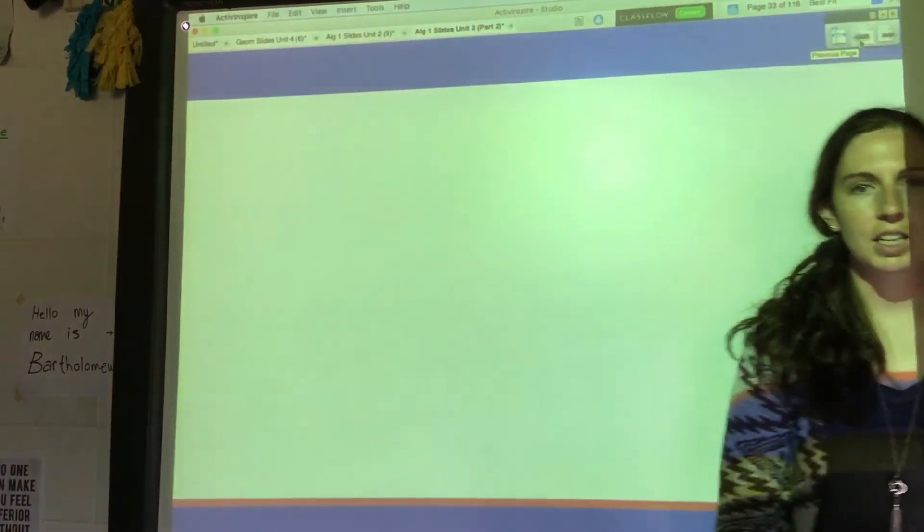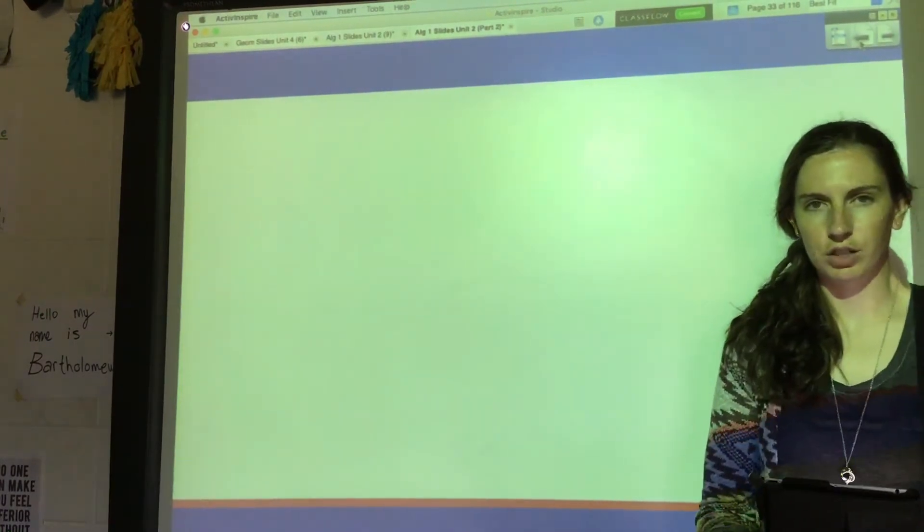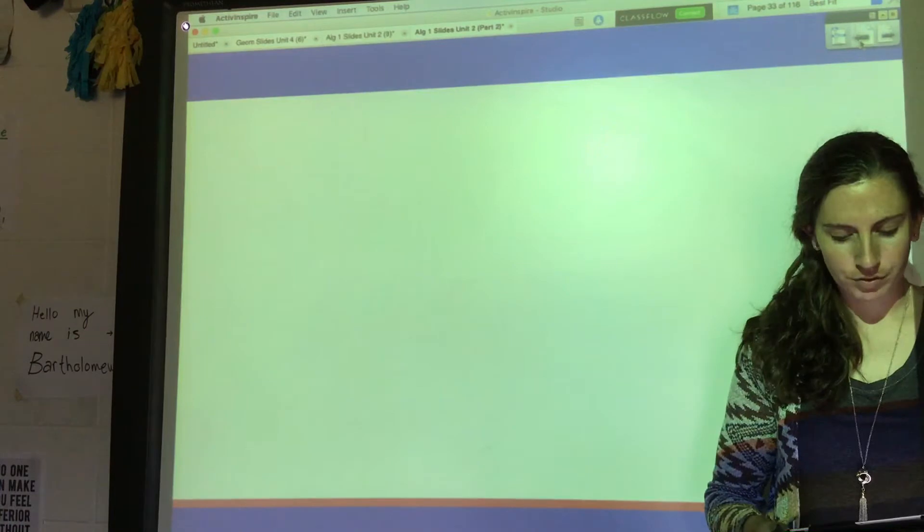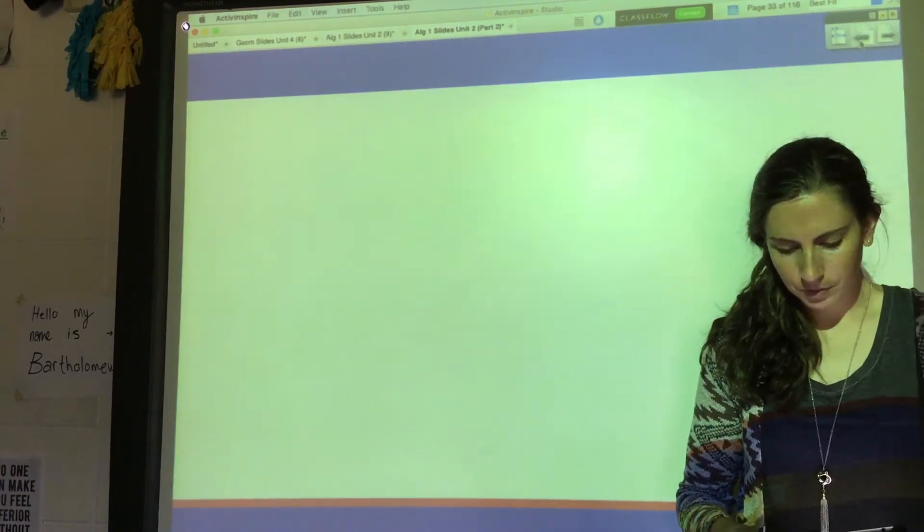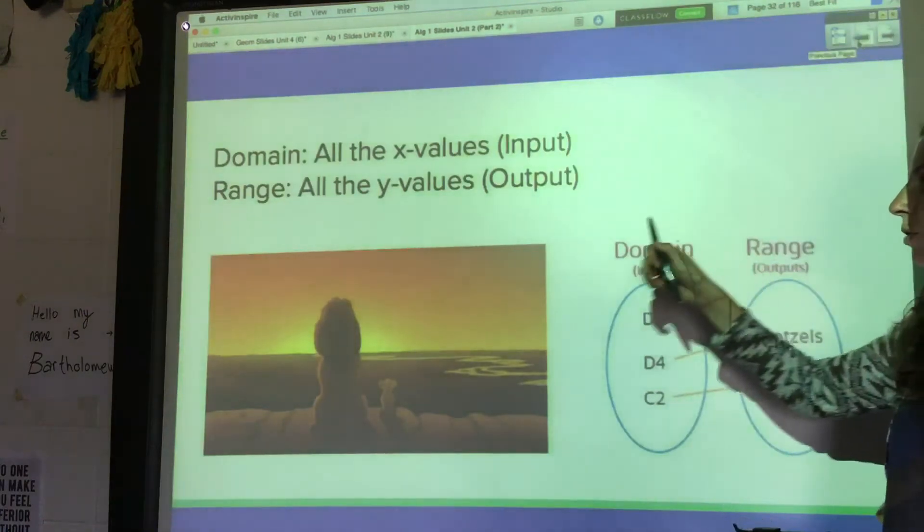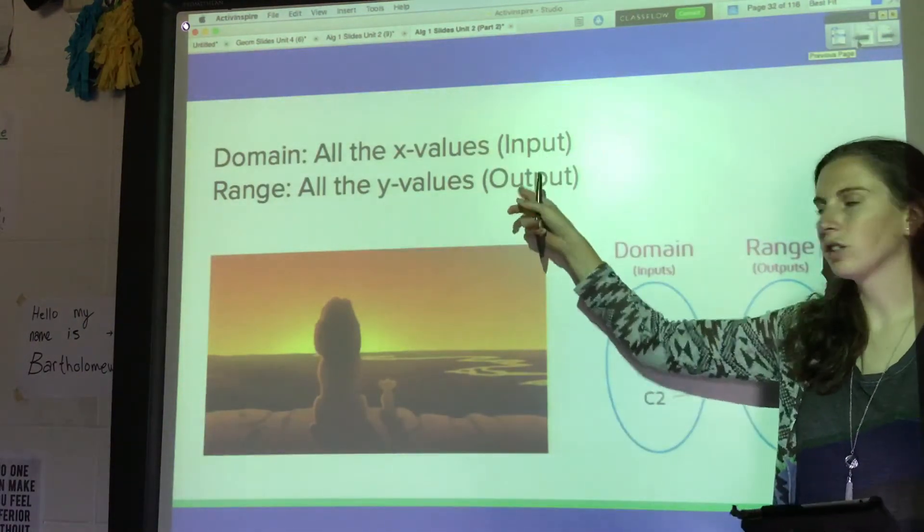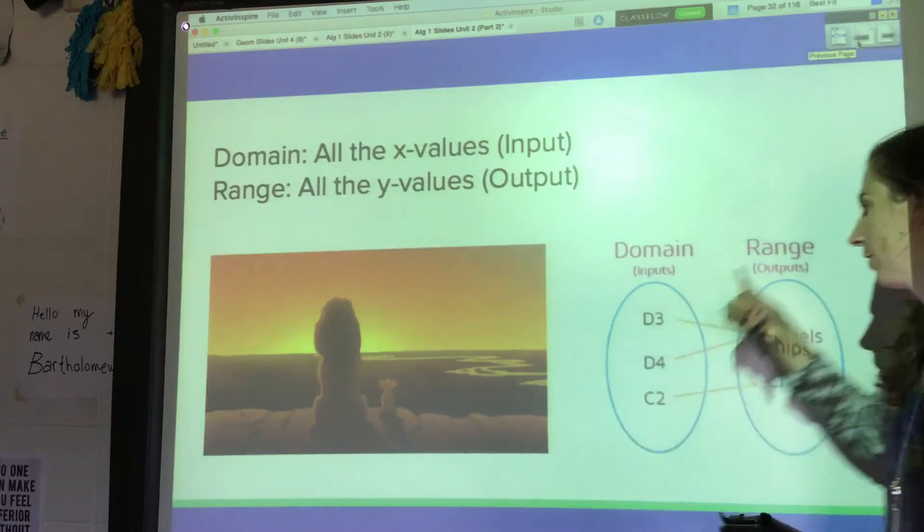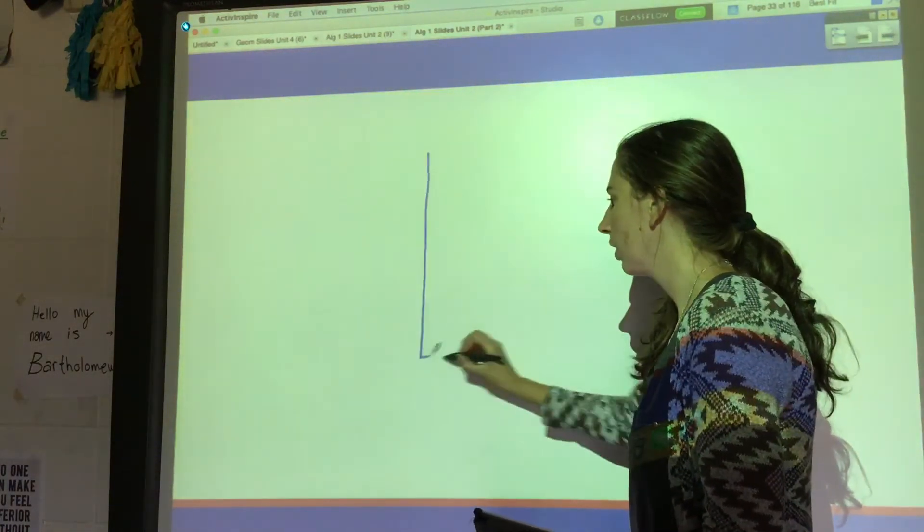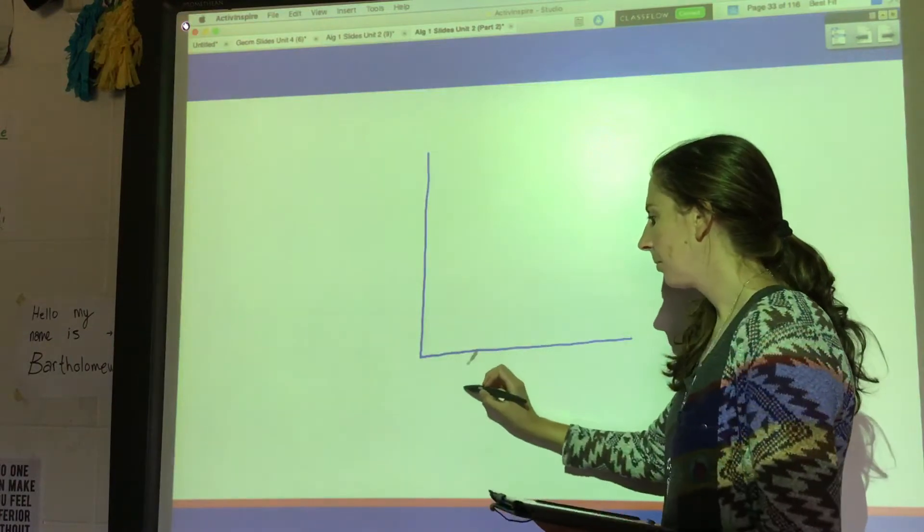This video is about continuous versus discrete functions or continuous versus discrete values or functions. We've talked about the domain and the range already. The domain is all the x-values of your function, the range is all the y-values or the outputs of your function. Let's think about some sort of scenario, like for example the